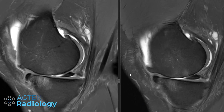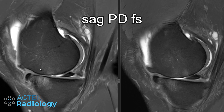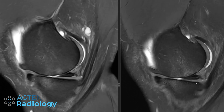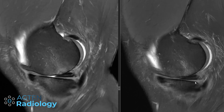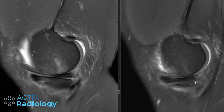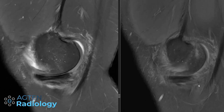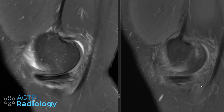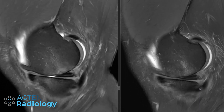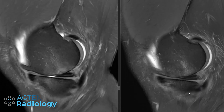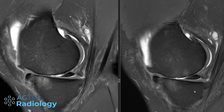So here we have two sequences — sagittal PD fat sat — same patient, same knee, same side. You can see both look quite nice and I'm just scrolling through slowly for you to have a look. It's not quite the same location of the slices, but for the purposes of this video comparing the 5-minute protocol versus the standard protocol, it's sufficient.